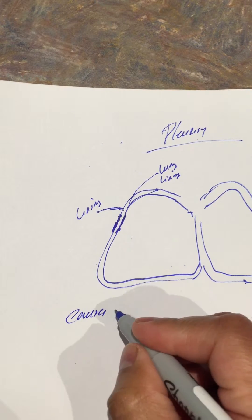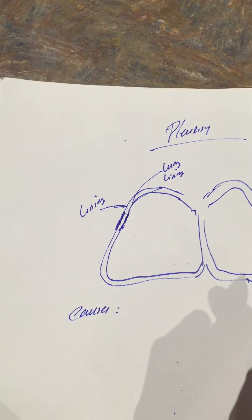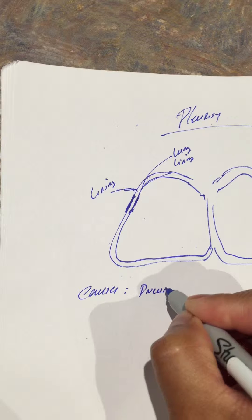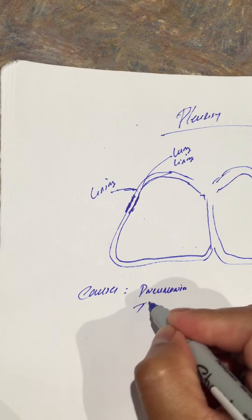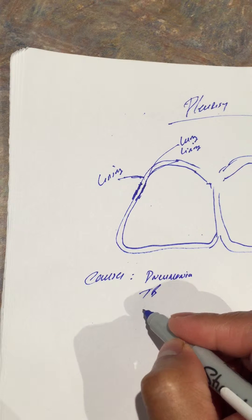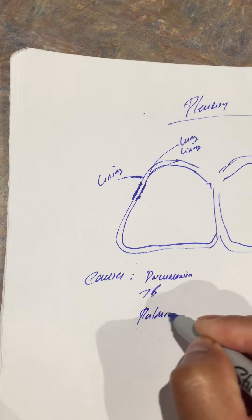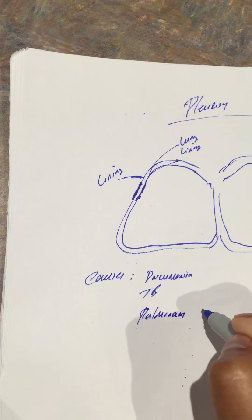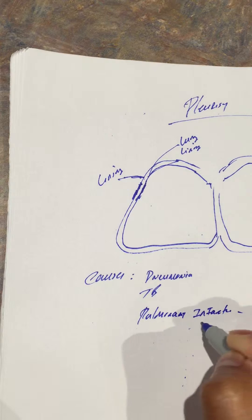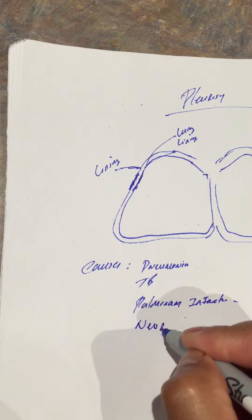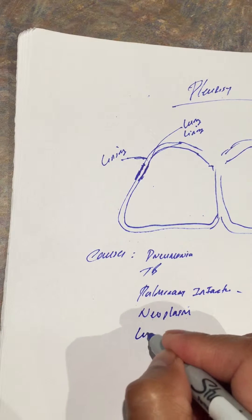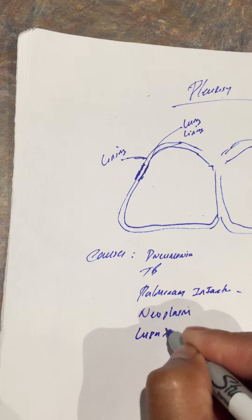So what are some causes of pleurisy or pleuritis? Pneumonia, tuberculosis, some type of pulmonary infarction, some type of neoplasm, or maybe something like an autoimmune disease such as lupus.